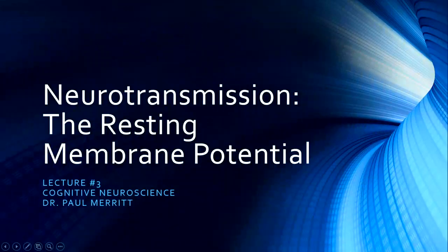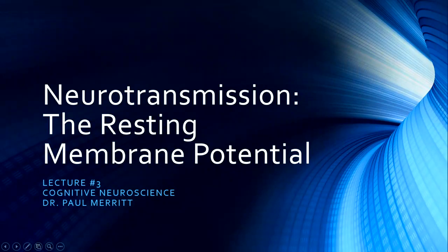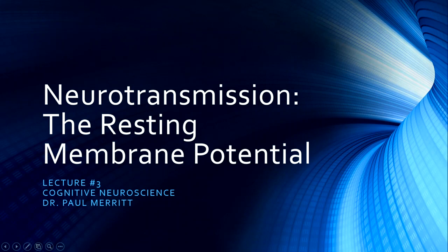Welcome to our third lecture on Cognitive Neuroscience. In our last lecture we talked about structures and functions of neurons, and in this lecture we are going to take a look at the resting membrane potential in more detail. In this lecture and the next lecture on the action potential, we're going to spend quite a bit of time talking about how ions move back and forth across the membrane.